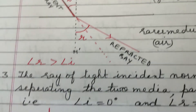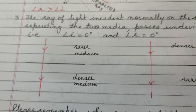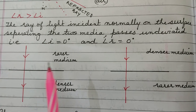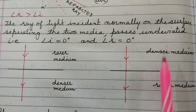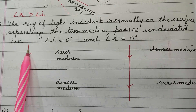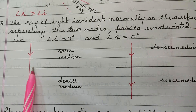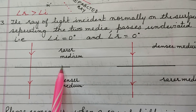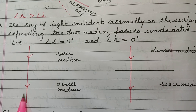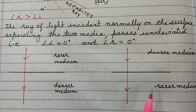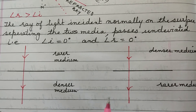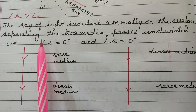Coming on to the third point: if the ray of light is incident normally on the surface of separation — whether the ray is going from rarer to denser medium or from denser to rarer medium — and the ray of light is incident at 90 degrees to the surface of separation, in that case the ray moves undeviated. There will be no bending of the ray of light. The same applies when moving from denser to rarer medium: the ray again moves undeviated.